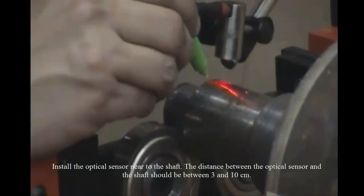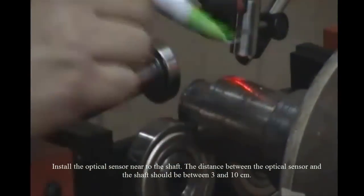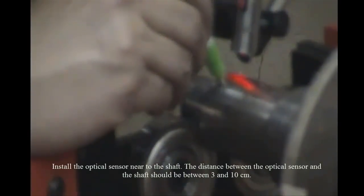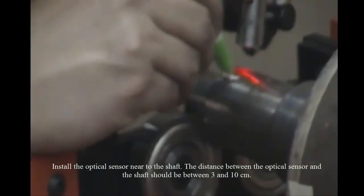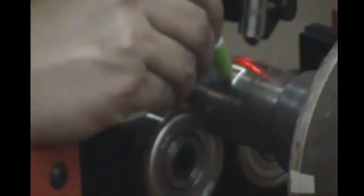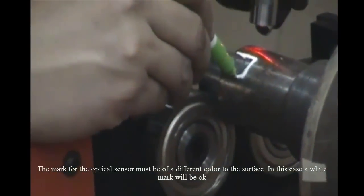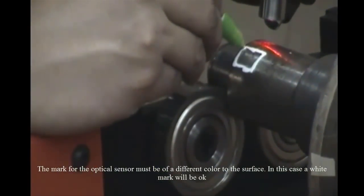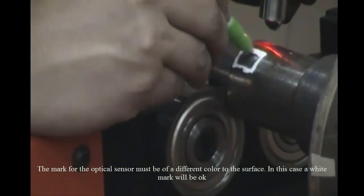Install the optical sensor near to the shaft. The distance between the optical sensor and the shaft should be between 3 and 10 cm. The mark for the optical sensor must be of a different color to the surface. In this case a white mark will be okay.